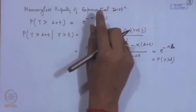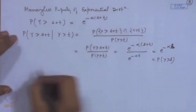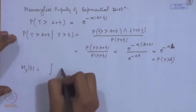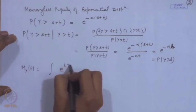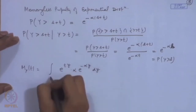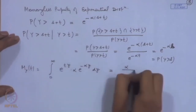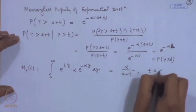The moment generating function of the exponential distribution is α/(α − t) for t < α.